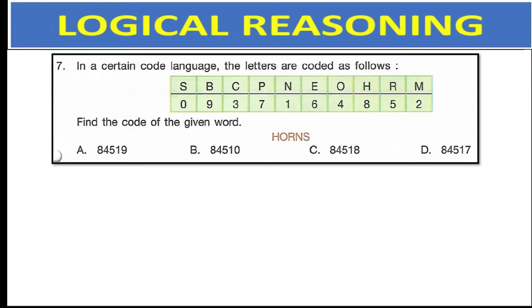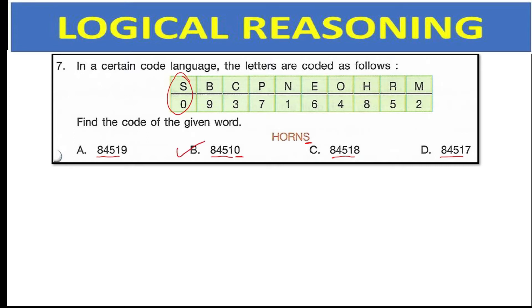In a certain code language, the letters are coded as shown. Find the code of the given word 'Hans.' Here is a trick: if you look at the answer options, all of them have the first four letters the same. So rather than finding the code for H-A-N, just look at S. S is 0, so the code ending in 0 is the right answer.